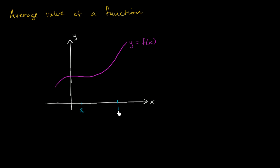That's what makes it closed — we're including our endpoints. So we're going to think about this interval right over here, between x is equal to a and x is equal to b. What is the average value of this function?